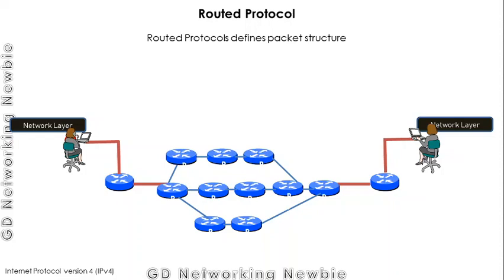Today we are going to discuss two terms which are related and because of their similarities sometimes create confusion. We are going to discuss routed protocol and routing protocol. Routed protocols are protocols which define the packet structure. The packet is a network layer entity — it takes data, puts a header on top, and we call it a packet. That is the job of a routed protocol.